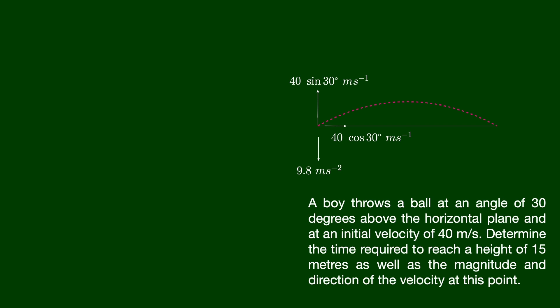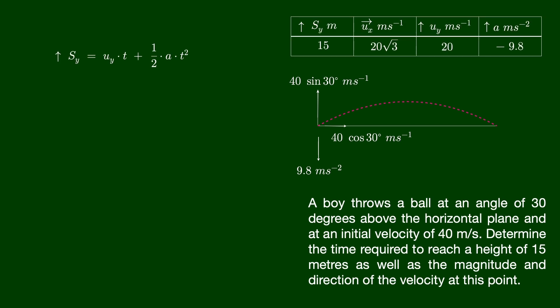The velocity components in these two directions are depicted here. Our goal is to find the time taken to reach a height of 15 meters. This pertains to the displacement of the ball in the vertical y direction. Let's list the available data. This kinematic equation is best suited to determine the time required to reach a displacement of 15 meters. Let us plug in the given values and express the equation as a function of time.